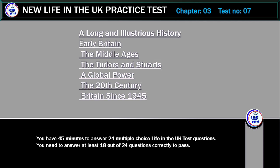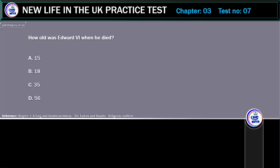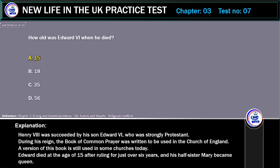You need to answer at least 18 out of 24 questions correctly to pass. How old was Edward VI when he died? A. 15. B. 18. C. 35. D. 56. Correct answer: 15.